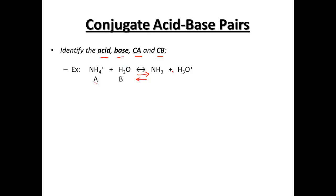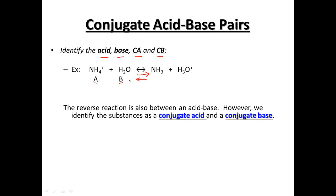NH4 is losing a hydrogen to become NH3, so it's going to be our acid. Water is going to gain that hydrogen ion, making it the base. In a reversible reaction, we can get this reaction to go back the opposite way. Water can donate its hydrogen back, and since it's a hydrogen donor, it's going to become our conjugate acid. And since NH3 can accept a hydrogen, it's going to become what we call our conjugate base.